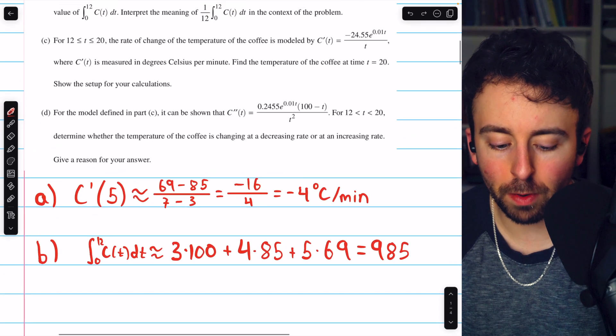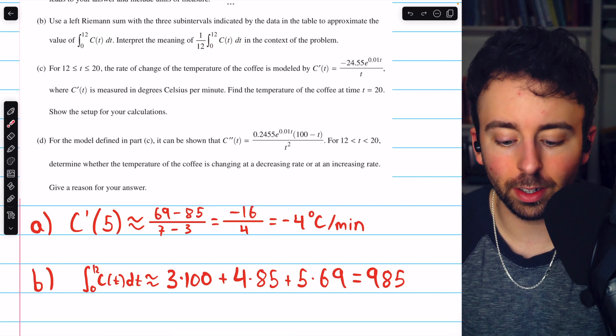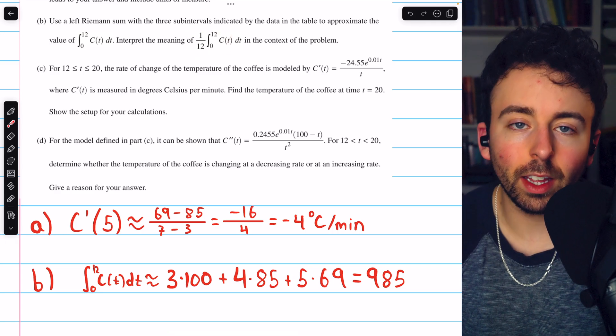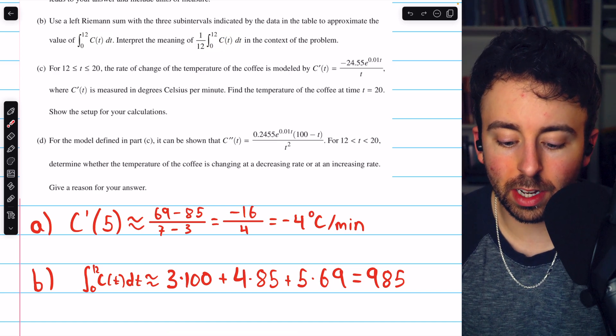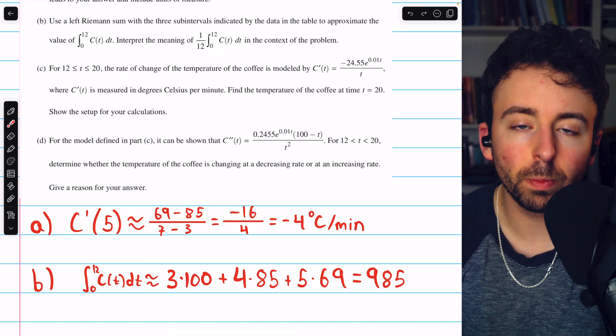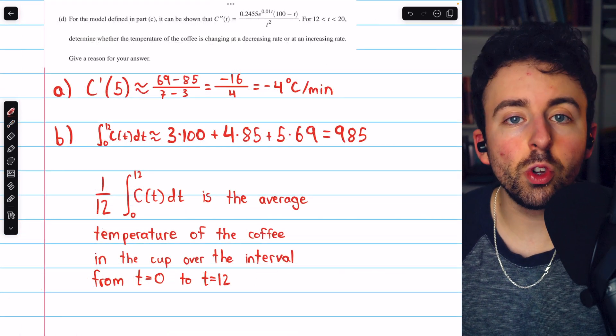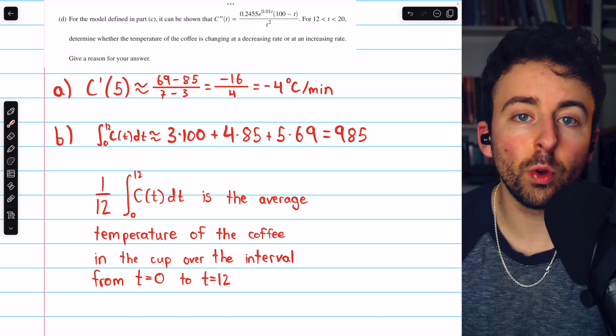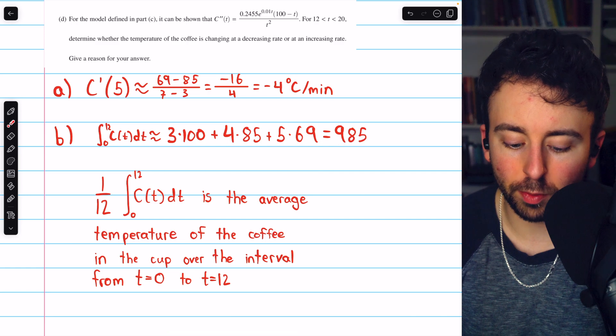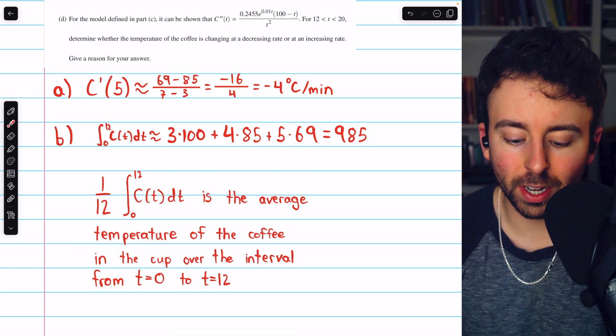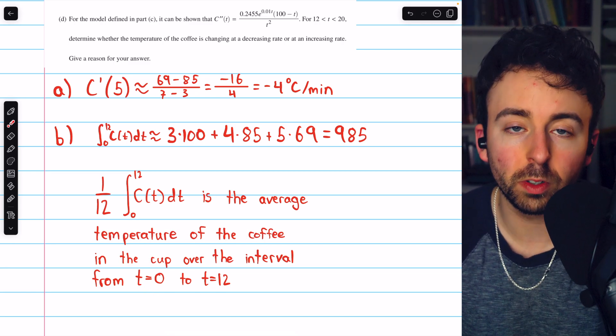But we're not done with part b because part b also asks us to consider the integral we just approximated divided by 12. What's the meaning of that thing? Well, it's adding up the temperatures from 0 to 12, and then dividing by the length of the interval, dividing by 12. That's how you calculate average temperature. It only asks us to interpret this expression. It doesn't ask us to approximate it, though if we did want to approximate it, we could simply take 985 and divide by 12. But the interpretation is that it's the average temperature of the coffee in the cup over the interval from 0 to 12.